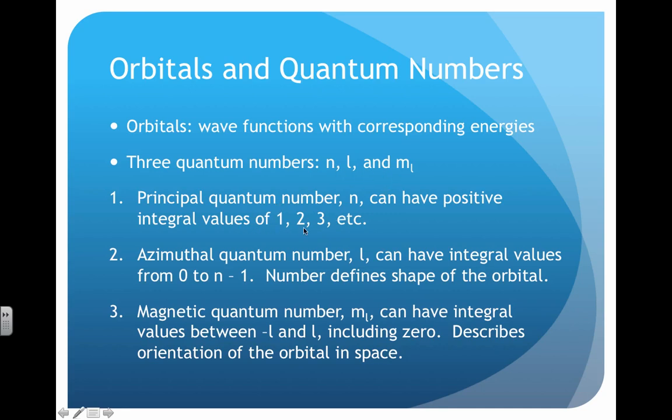n will always be a positive non-zero integer. So 1, 2, 3, etc. And that corresponds to the principal energy level and basically corresponds to how far away you are from the nucleus. The closer you are, the lower the number.